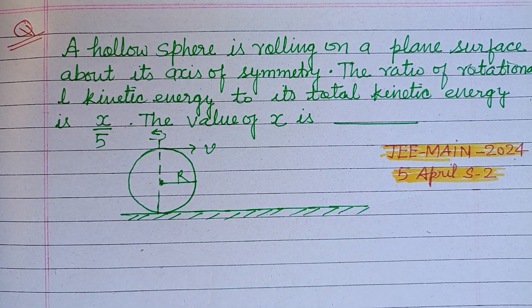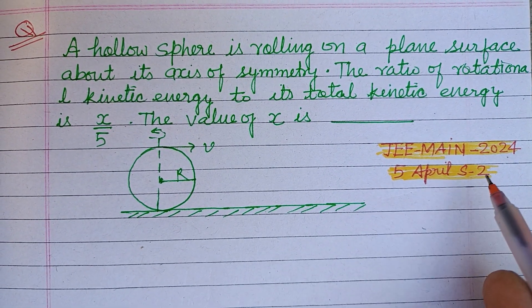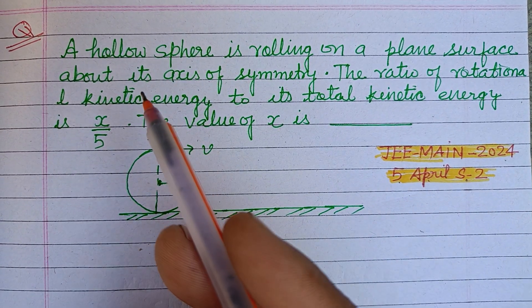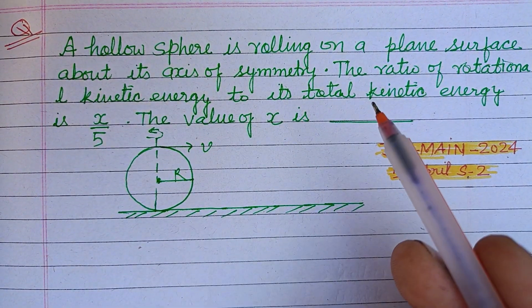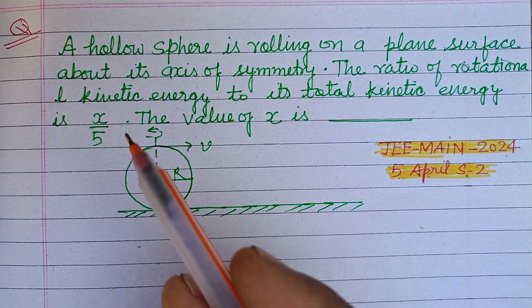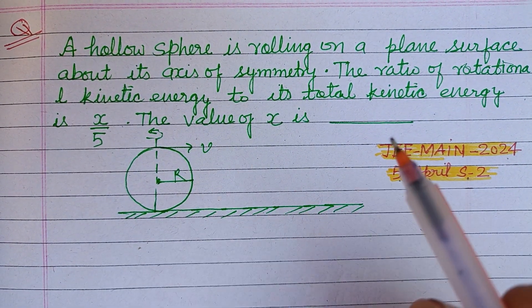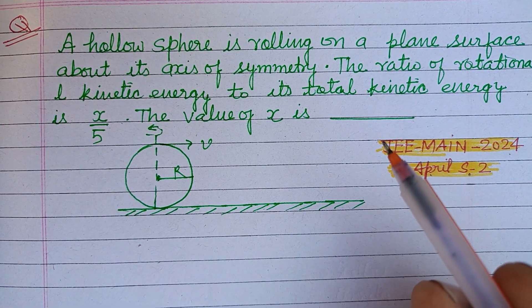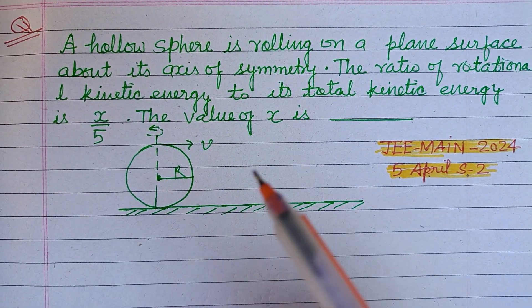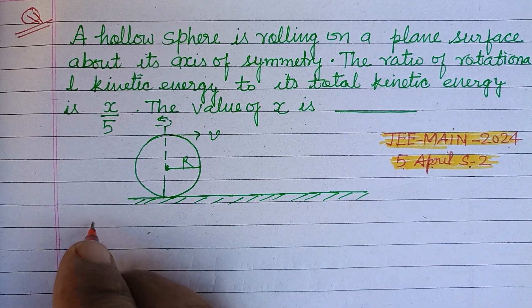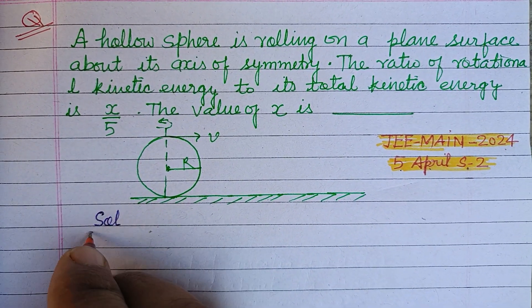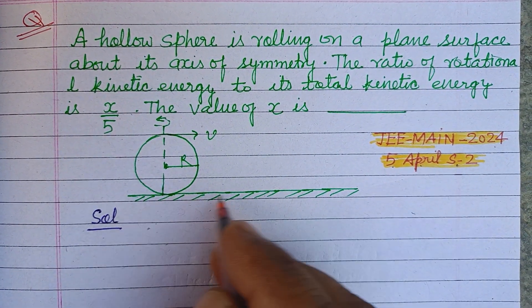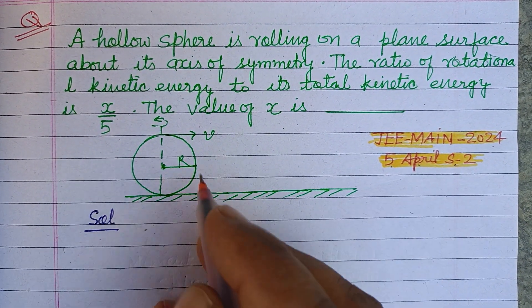Hello viewers, warm welcome to this YouTube channel. Question from JEE Main 2024, 5 April, 72nd: A hollow sphere is rolling on a plane surface about its axis of symmetry. The ratio of rotational kinetic energy to its total kinetic energy is x by 5. Then the value of x is?